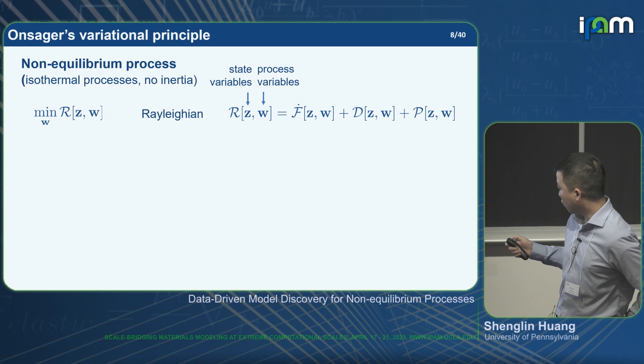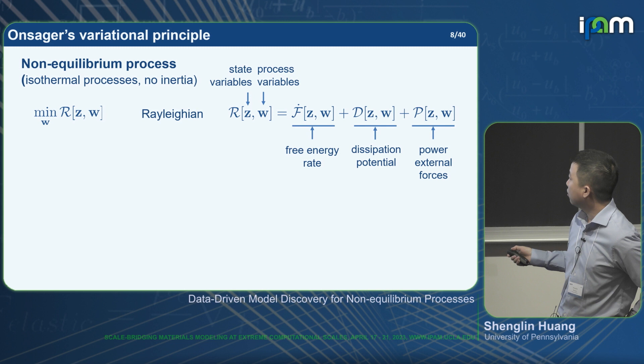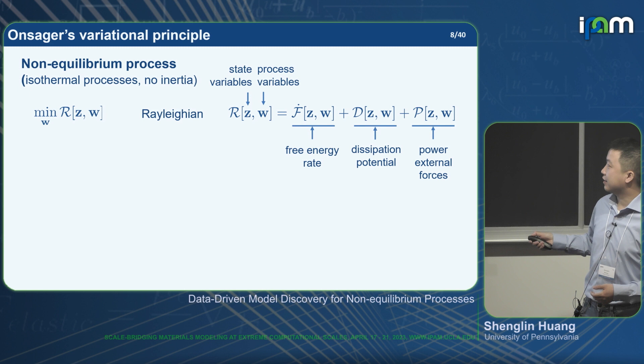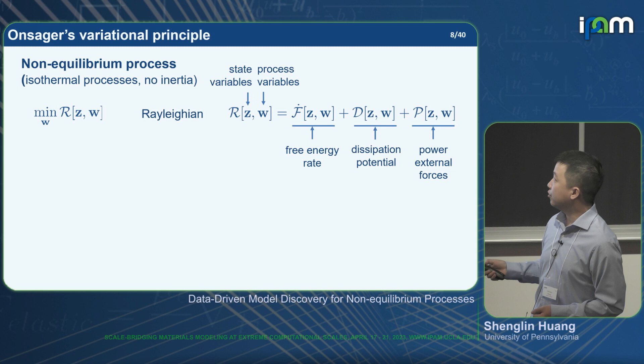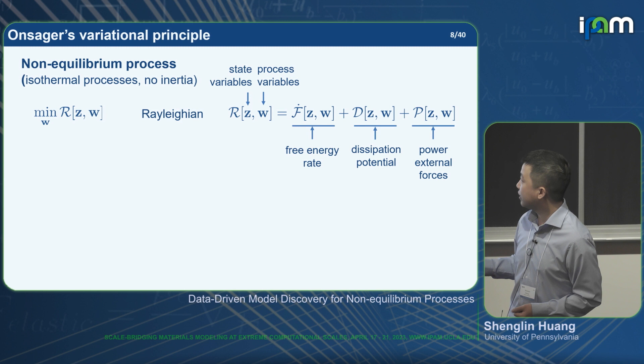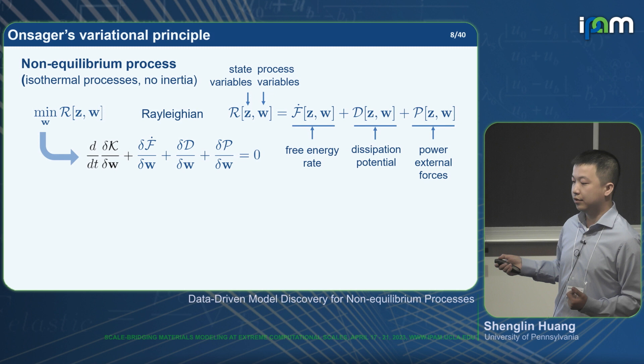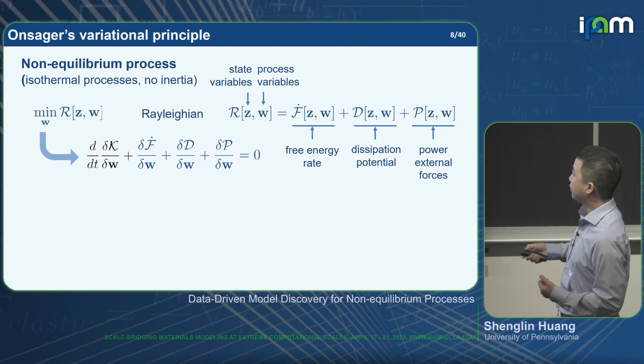The Rayleighian is defined as the summation of the free energy rate, the dissipation potential, and the power of external forces. The dissipation potential describes the potential of the irreversible process. If we want to add an inertia effect, we can simply add kinetic energy K to include the contribution from inertia.